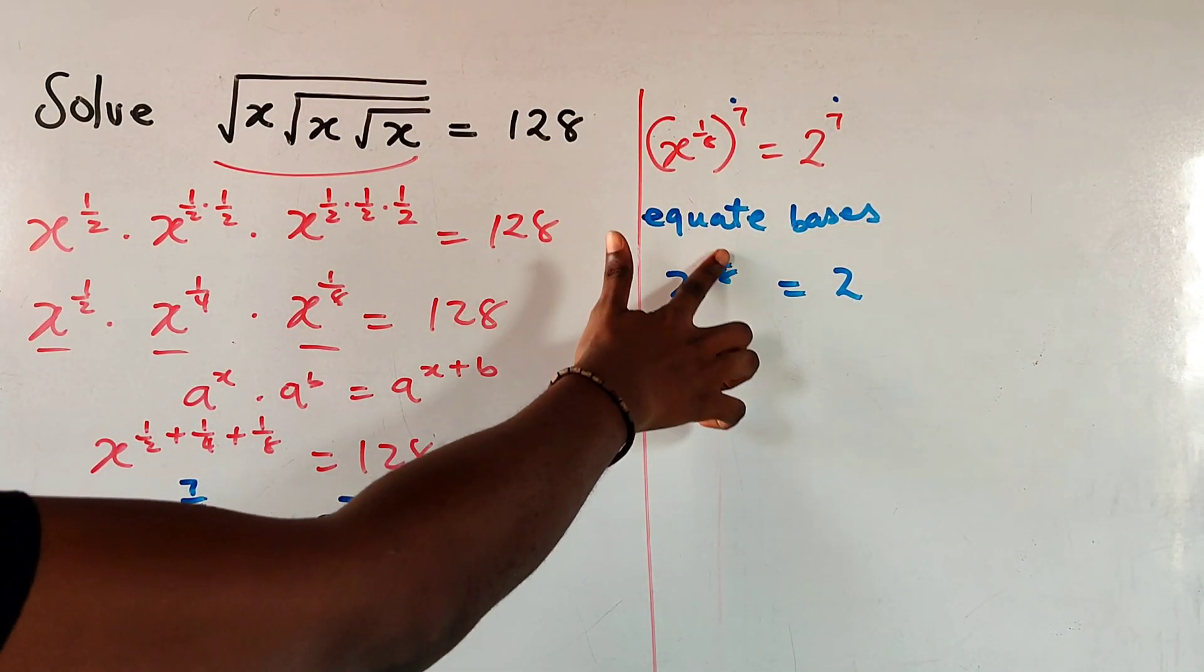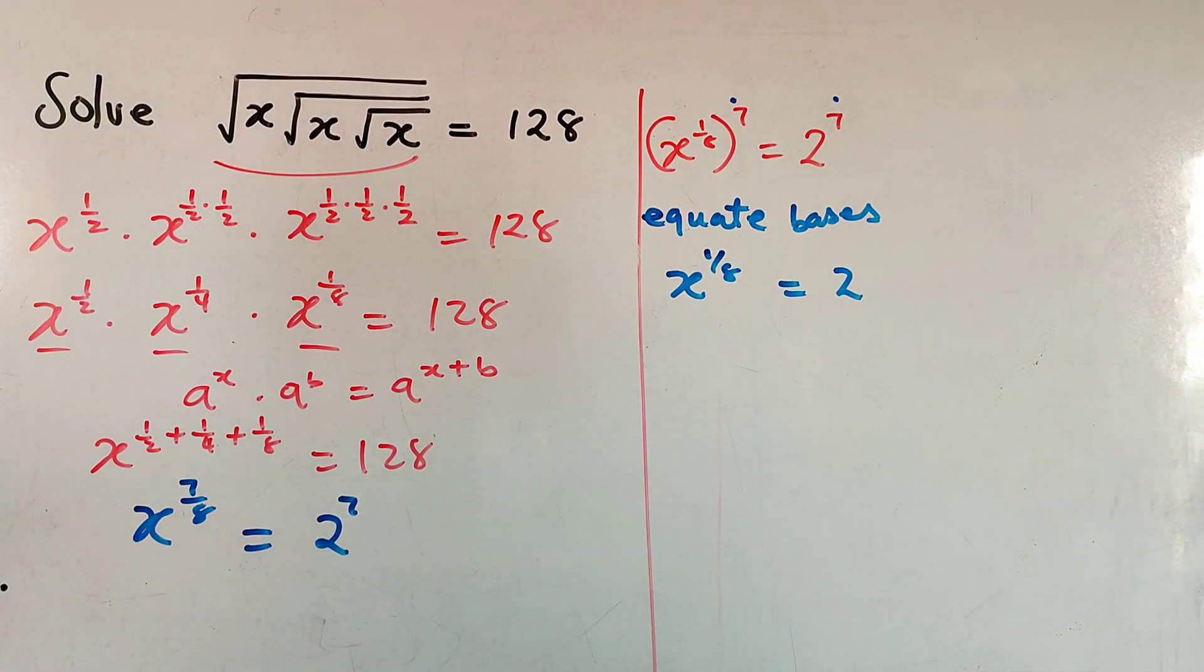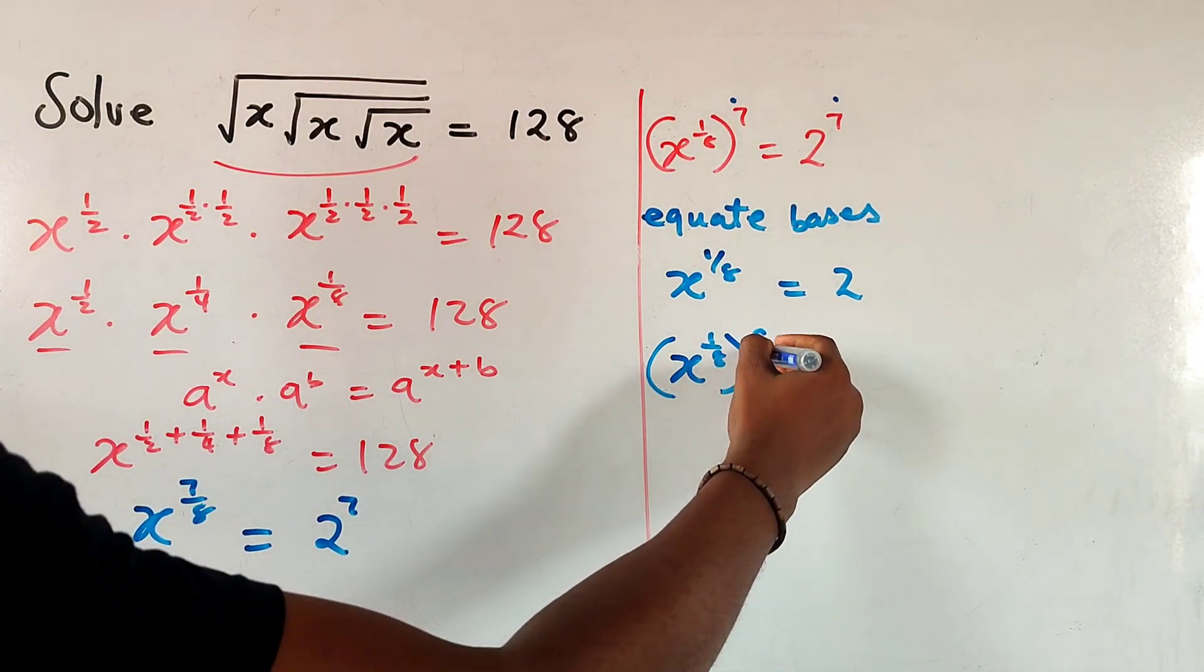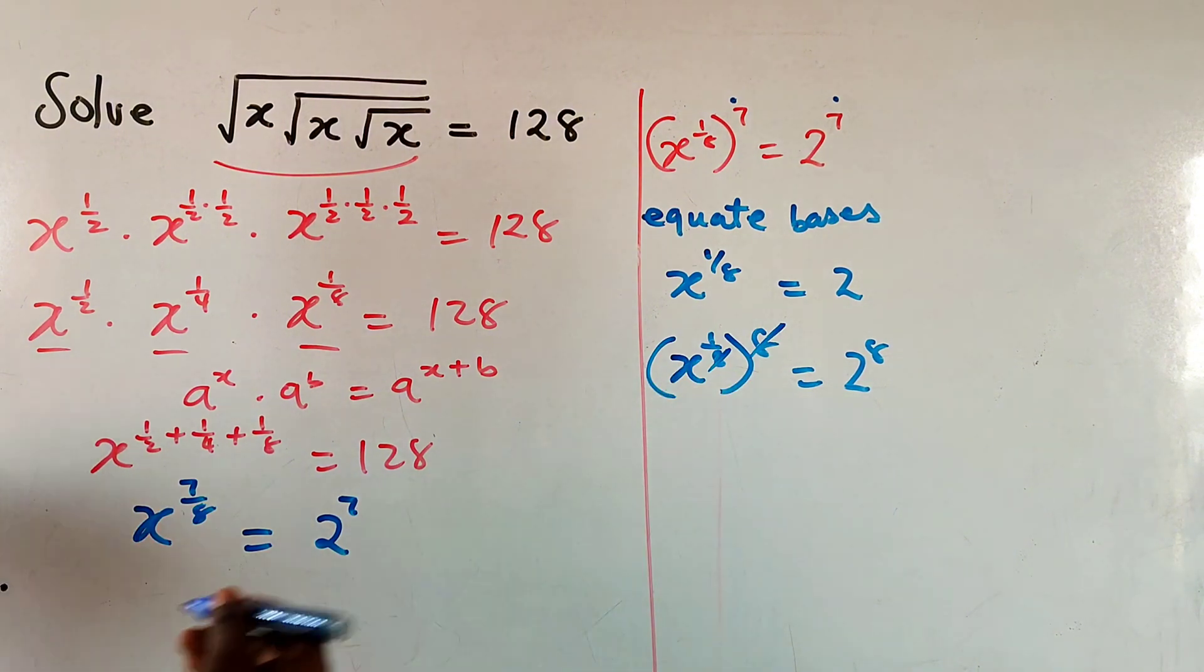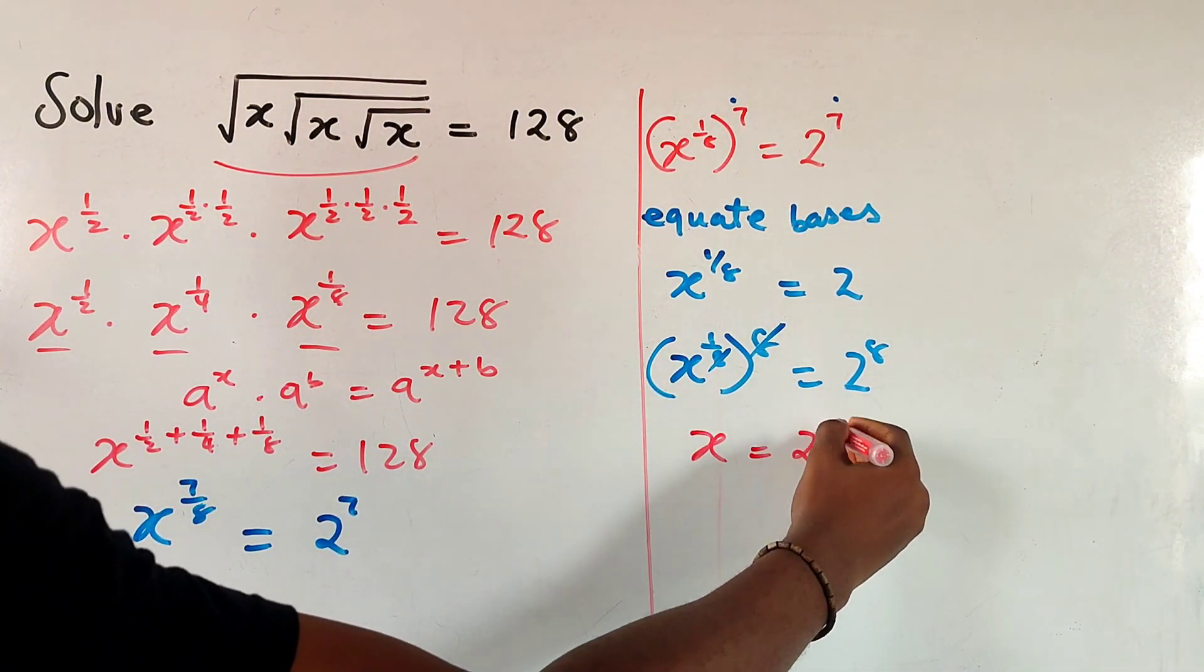Now to get rid of this power, this is 1 over 8 by the way, I could raise both sides to the power of 8. What do I mean by that? I could write x to the power of 1 over 8 in bracket 8 and 2 to bracket 8. So 8 cancels 8 here. And in the end, you have x equals to 2 to the power of 8.